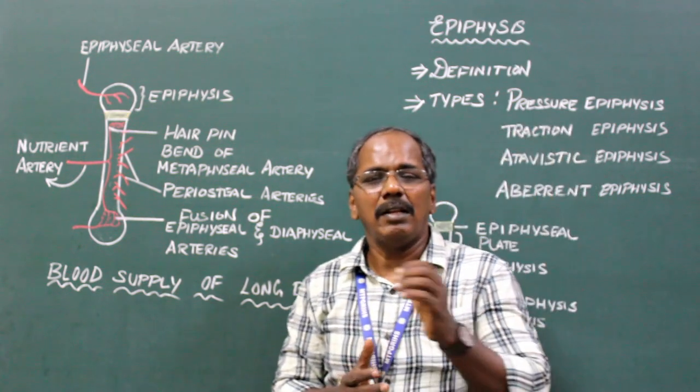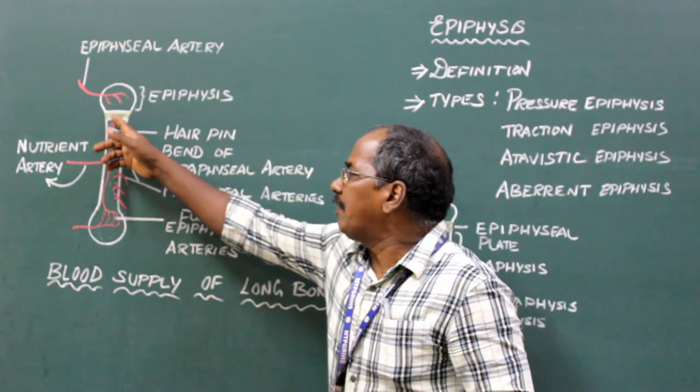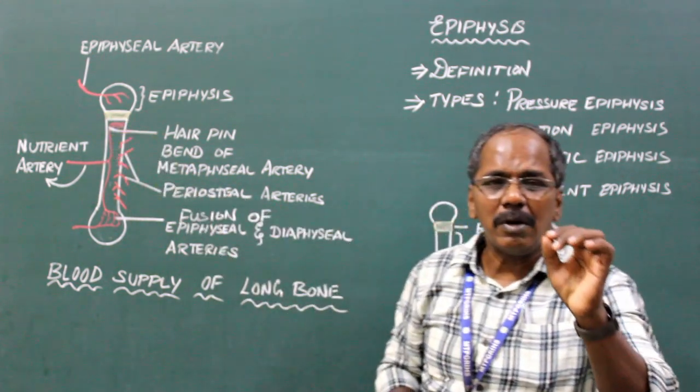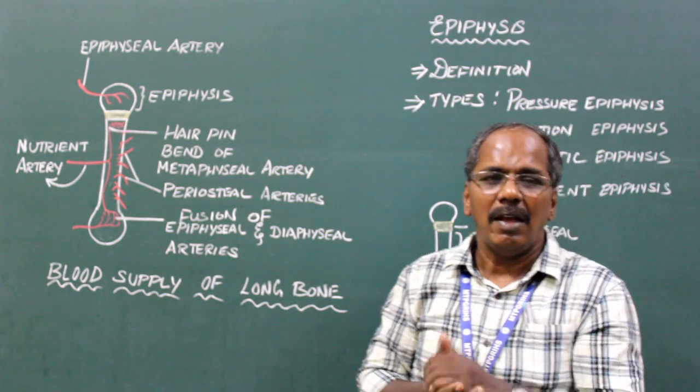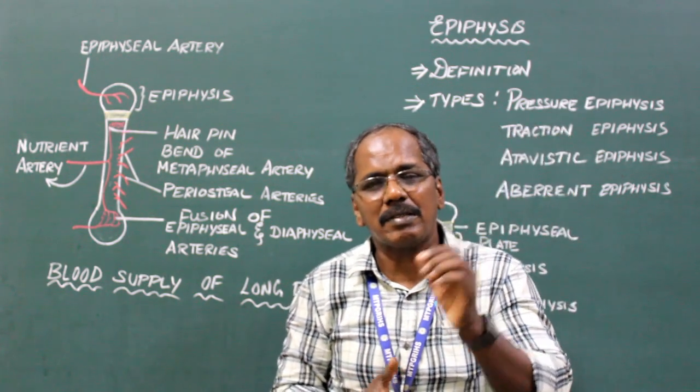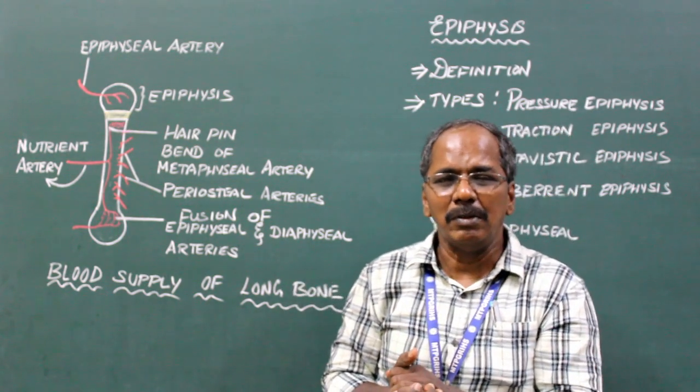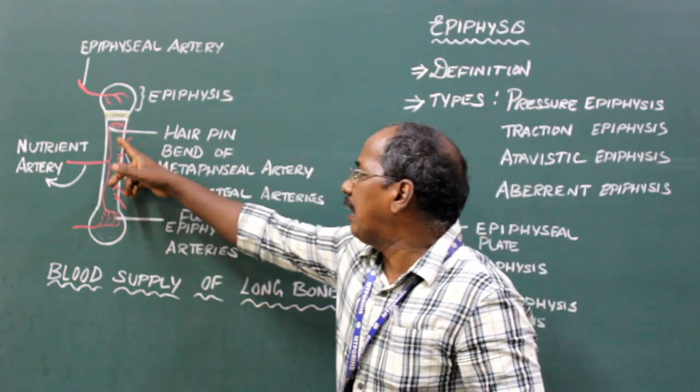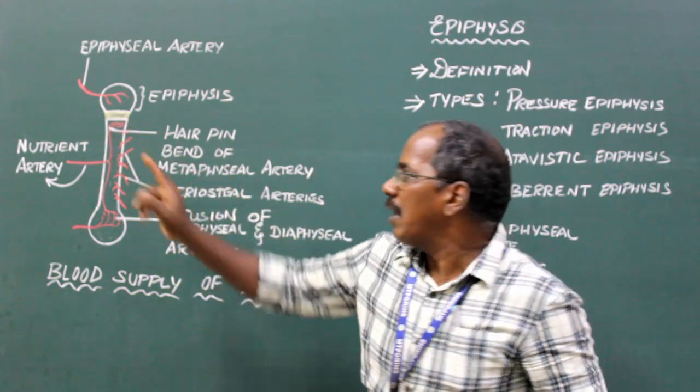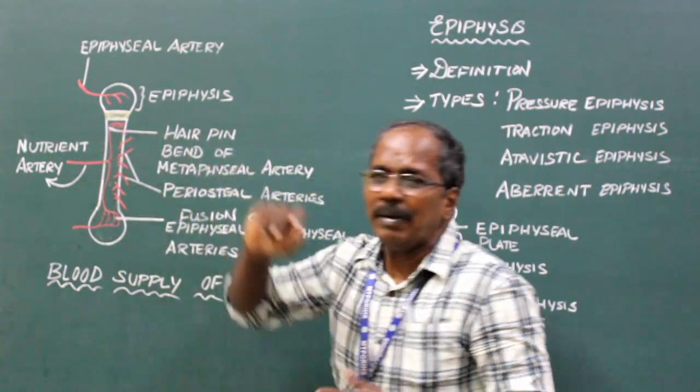In children, the metaphysis is the zone of active growth and has rich blood supply through end arteries which have a hairpin bend.